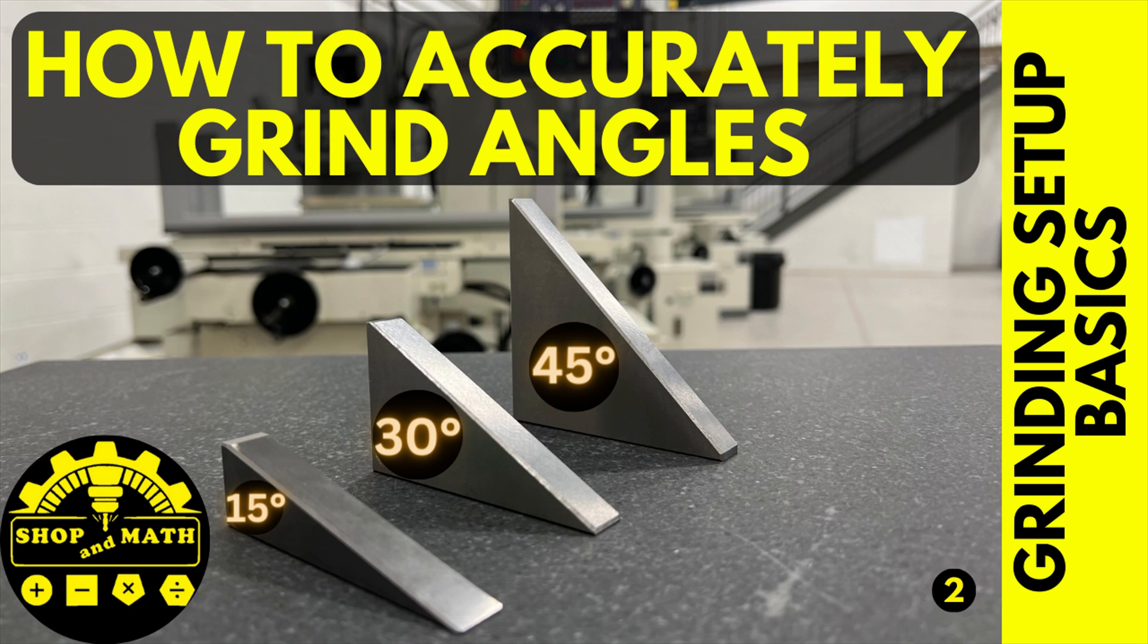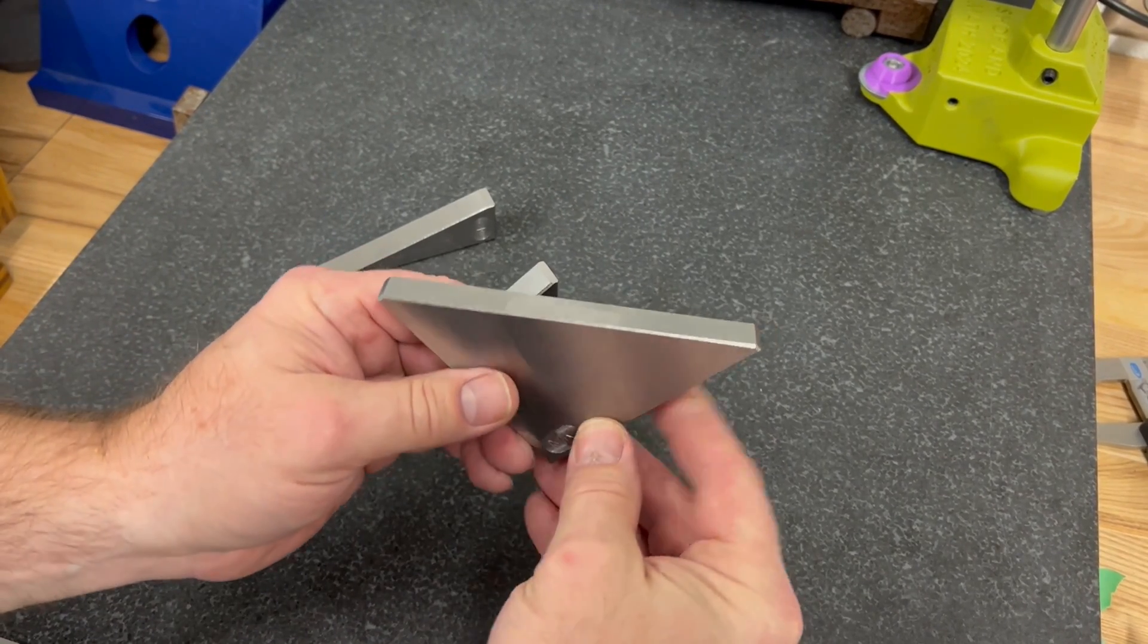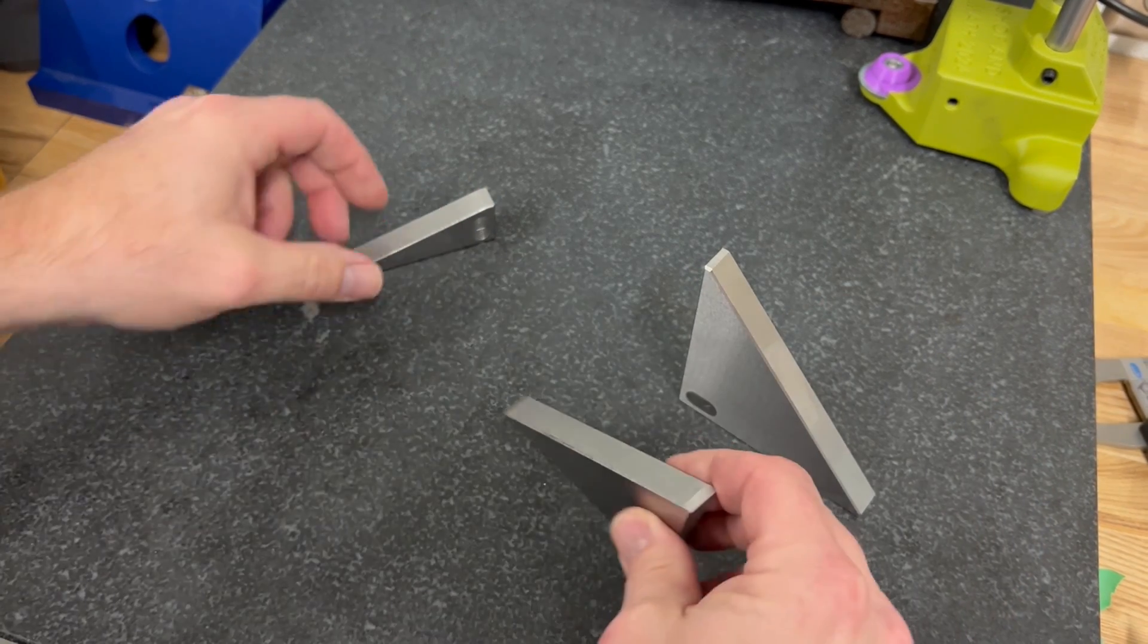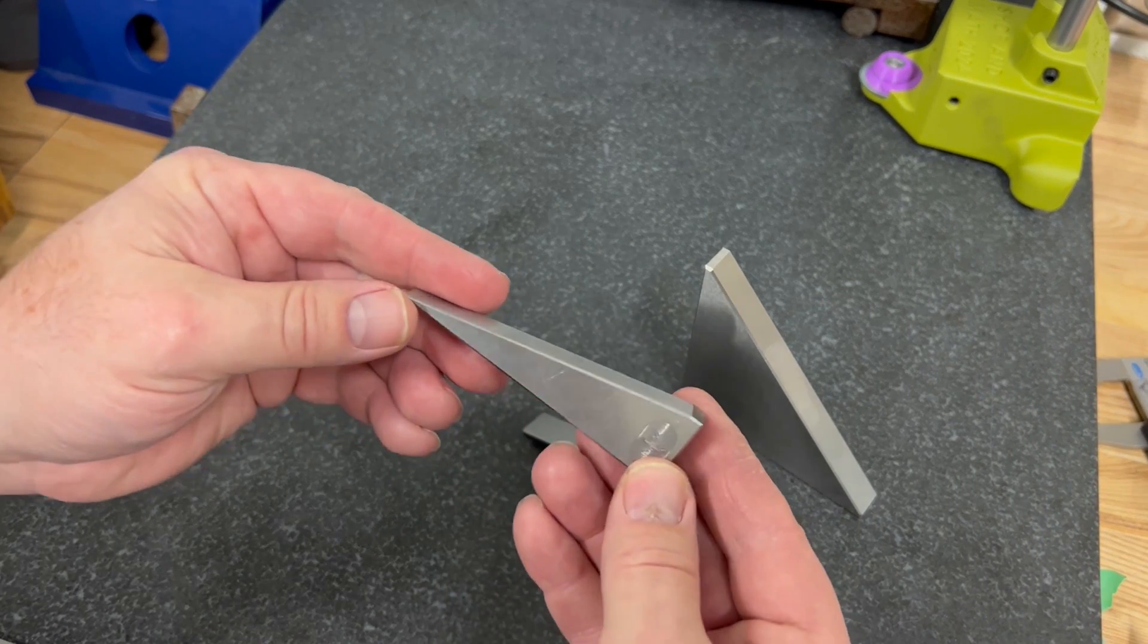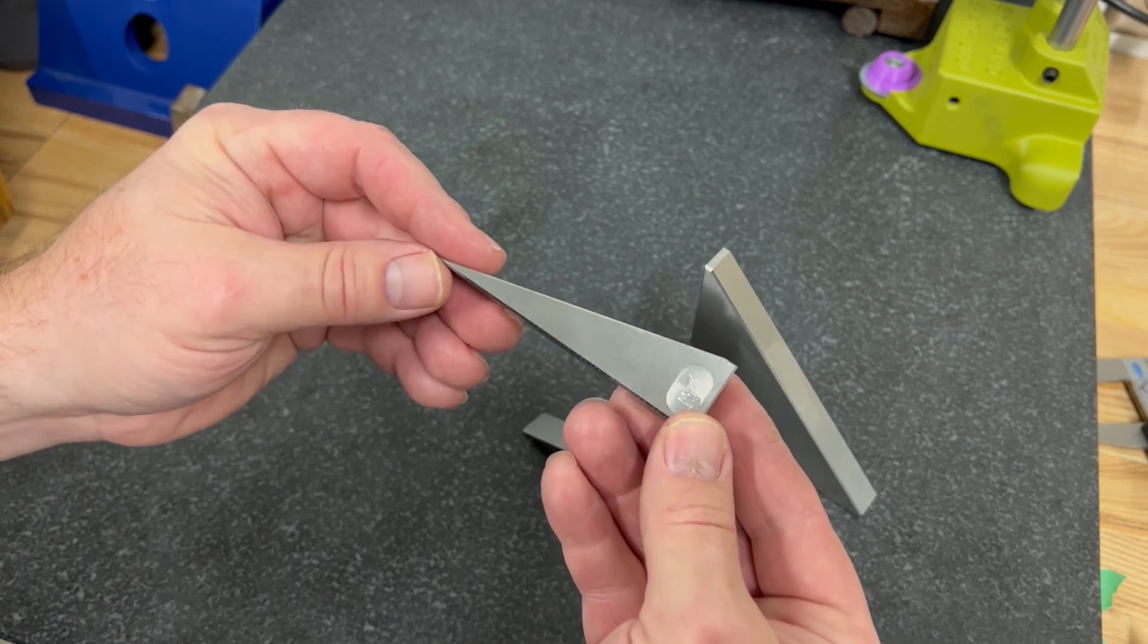How to accurately grind angles. This project is a level 3 general machinist apprenticeship project. In this video I will demonstrate proper setup technique to grind a 45, 30, and a 15 degree angle accurately. For argument's sake we're just going to call these angled parallels.